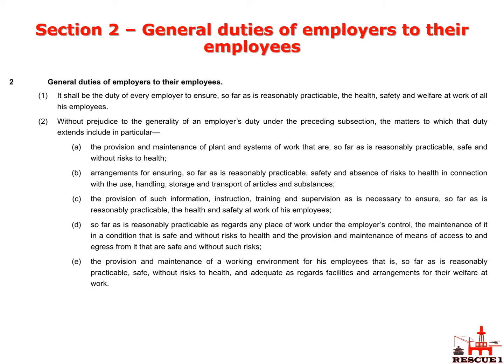2(c): provision of information, instruction, training and supervision as necessary — again, the words 'reasonably practicable' apply. 2(d): the maintenance and condition of entries and exits, so D is about doors. 2(e): the provision and maintenance of a working environment for employees, so far as reasonably practicable, safe without risk to health, with adequate facilities. So you're looking at welfare in E.